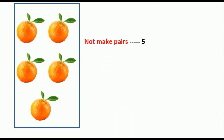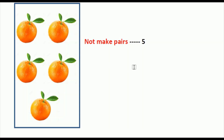Now the next picture — do all the oranges make a pair? Here some are paired, but when it comes to the last one it is not paired — one is extra, one is left without pairing. So we can say that in this picture the oranges are not making pairs. The numbers which do not make pairs are called odd numbers.